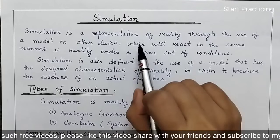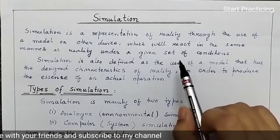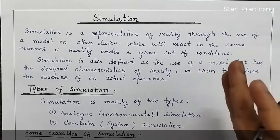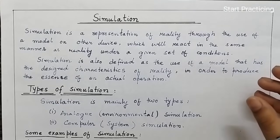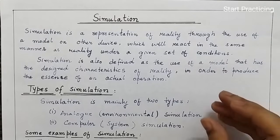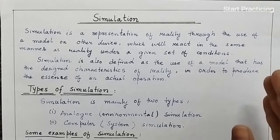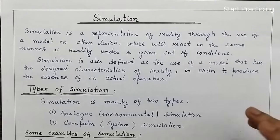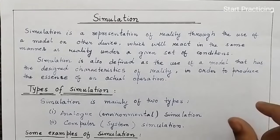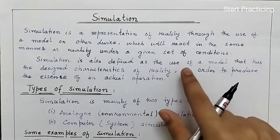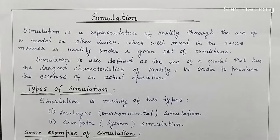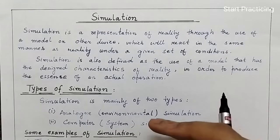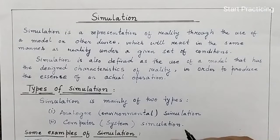So what is simulation? Simulation is a representation of reality through the use of a model or other device which will react in the same manner as reality under the given set of conditions. Simulation is like a reality model. For example, if we are inventing some machine, we cannot invent that machine directly — we make a model first. We check this model: if it is applied in real life, what will be the effect, how much will it benefit, and in which way it will work. This technique we call simulation. Simulation is also defined as the use of a model that has designed characteristics of reality in order to produce the essence of an actual operation.